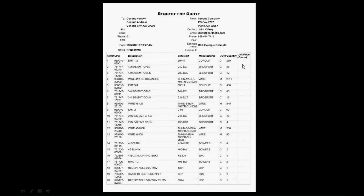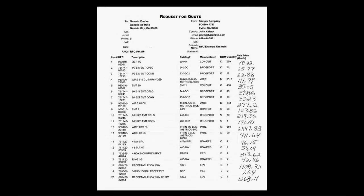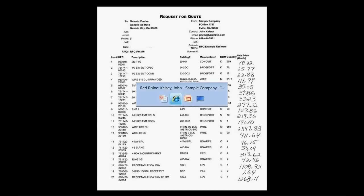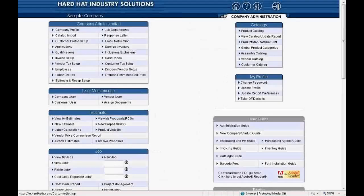Now let's assume you have received the prices back from your vendor. This is an example of an RFQ priced by a wholesale vendor. Notice in the far right column, Unit Price Quote, how the prices of each item are written in. We now move to the second part of today's training session: how to take the price information you get from your vendor and put it into your estimates. First, print out the pricing sheet your vendor sent you. Our next step is to locate the RFQ that was sent to your wholesaler in Red Rhino.